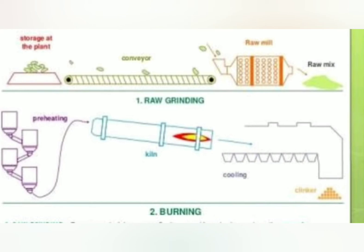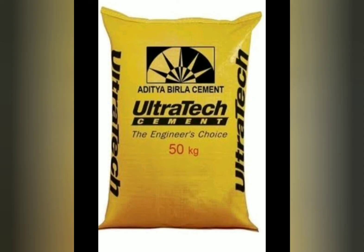The next step is grinding. We need to grind the clinkers, crush and grind to produce cement. We need to use gypsum to control the setting time. We mix gypsum into the cement and store it in 50 kg bags.